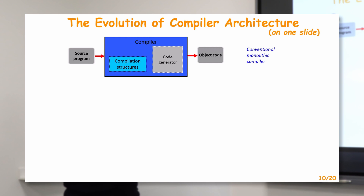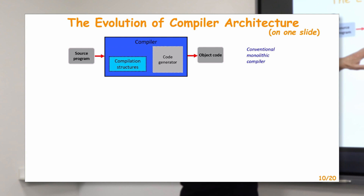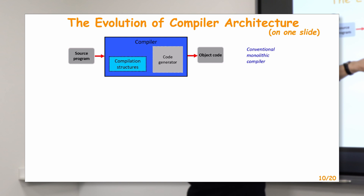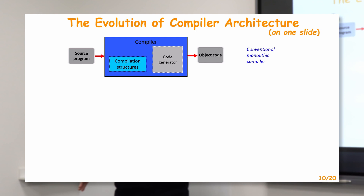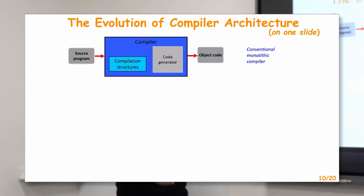This is my favorite slide. I will try to show you how the evolution of the compiler architecture is going, or should be going by my opinion. This is the conventional scheme: we have source code, we pass it to a compiler, getting object code as a result. What's happening inside the compiler — nobody knows and nobody is interested. There are some internal structures and a code generator, but the compiler is considered as a black box — a conventional monolithic compiler.